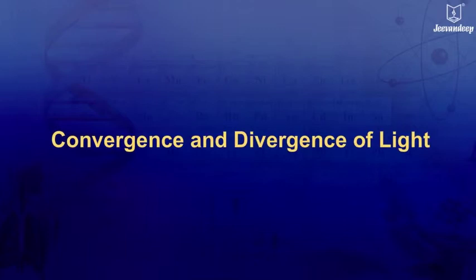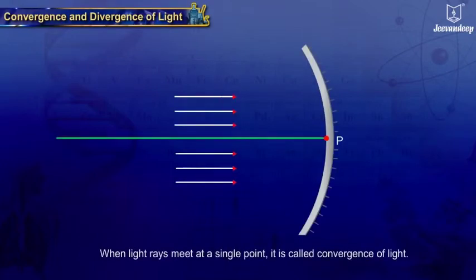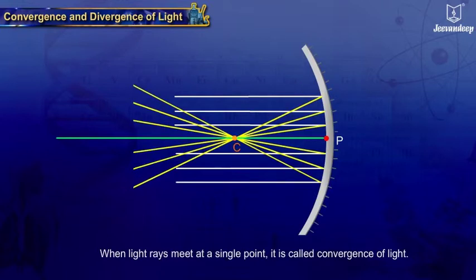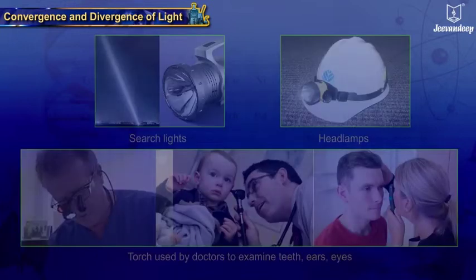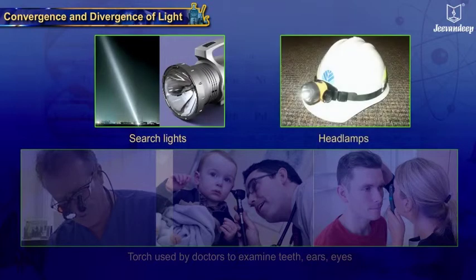Convergence of light: when light rays meet at a single point, it is called convergence of light. When we want to concentrate light at a point, converging beam of light is used, for example in searchlights, headlamps, and torches used by doctors to examine teeth or eyes.